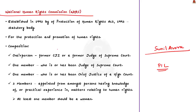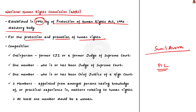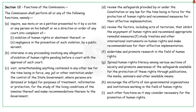The National Human Rights Commission was established in the year 1993 under the Protection of Human Rights Act 1993. So the NHRC is a statutory body. It was established for the protection and promotion of human rights. The functions of the commission are stated in Section 12 of the Protection of Human Rights Act 1993. Apart from inquiry into complaints of violation of human rights or negligence in the prevention of such violation by a public servant, the commission also studies treaties and international instruments on human rights.